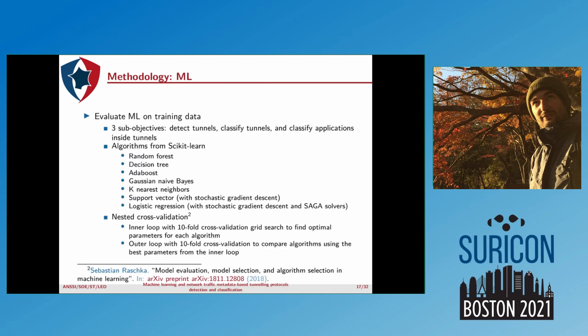How do we use machine learning on our training data? We apply ML on each of the three sub-objectives: tunnel detection, tunnel classification, and application classification inside tunnels. We use algorithms from Scikit-learn, applying nested cross-validation with an inner loop of tenfold cross-validation and a grid search to find optimal parameters for each algorithm, and an outer loop of tenfold cross-validation to compare algorithms together using the best parameters from the inner loop.